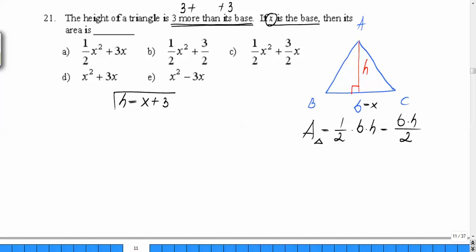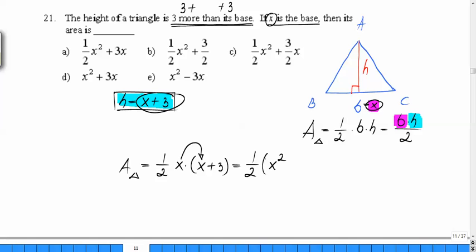Now all I need to do is take my base and plug it in. The area of your triangle will be one half of base, which is X, times height, which is X plus three. This gives you what? Well, I will have one half, and first I will multiply this X to everything inside the parenthesis. X times X is X squared, and X times three is 3X.